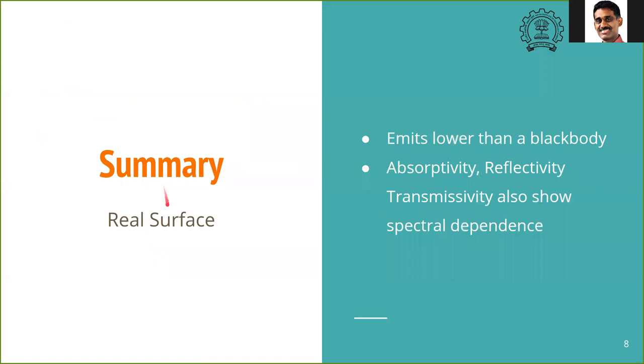To summarize, real surfaces emit lower than blackbody. Their absorptivity, reflectivity, and transmittivity also show a spectral dependence. It is important to consider this spectral dependence in our calculations. Thank you.